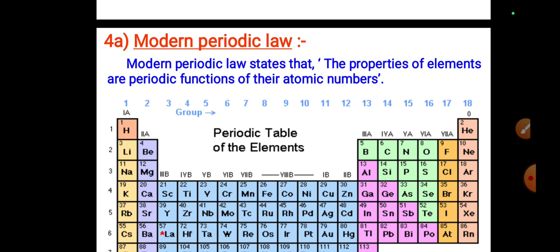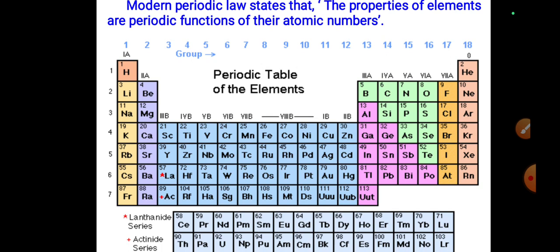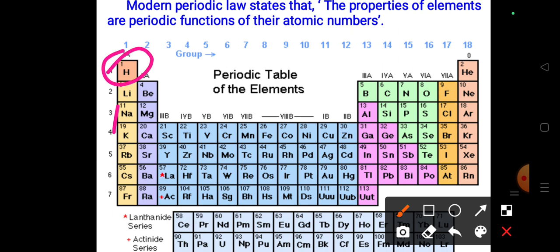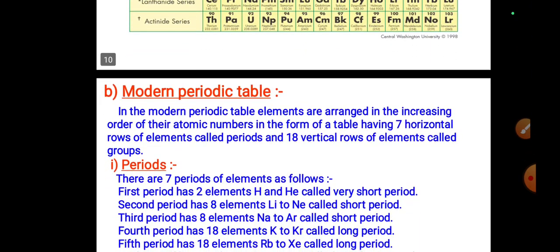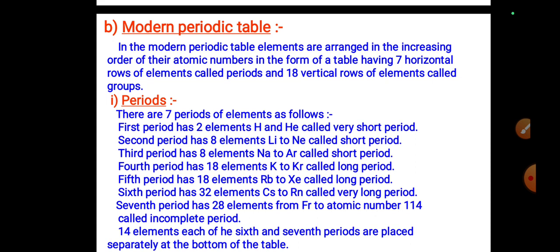Modern Periodic Law states that the properties of elements are periodic functions of their atomic numbers. In the modern periodic table, alkali metals, non-metals, metalloids, group 17 elements called halogens, and inert gases are identified. Elements starting from lanthanum are called lanthanides, and those starting from actinium are called actinides — both groups are placed outside the main periodic table.